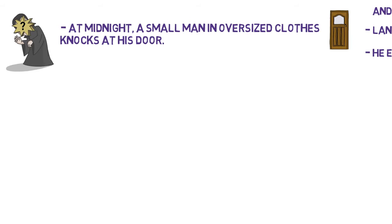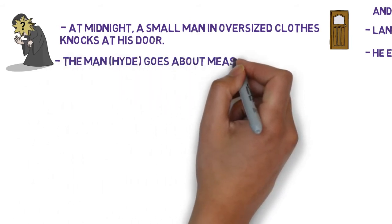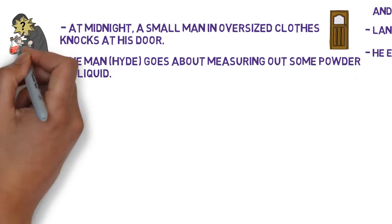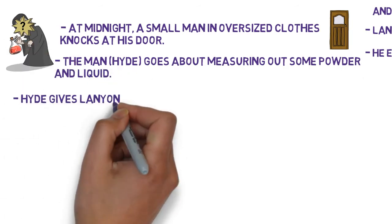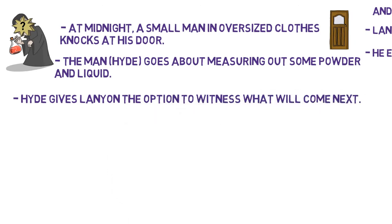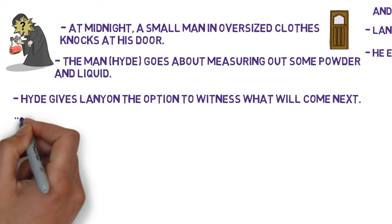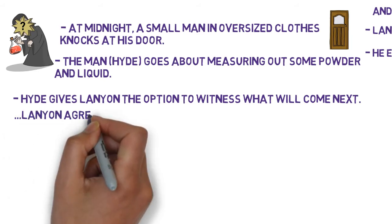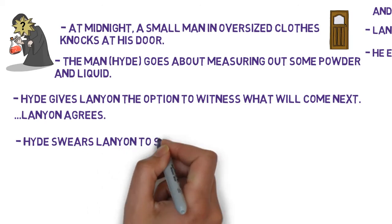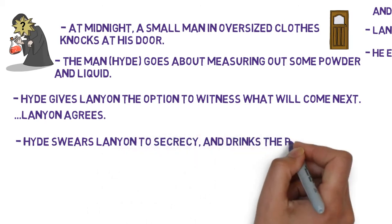The man is impatient, and when Lanyon indicates the drawer, the man — who the reader clearly understands to be Edward Hyde — springs on it and goes about measuring out some powder and liquid. Hyde gives Lanyon the option to witness what will come next, or remain in the dark. Lanyon says that he's come too far with inexplicable services to not see what will happen next, and agrees. Hyde reminds Lanyon of their professional vows — essentially, Hyde swears Lanyon to secrecy — and then he drinks the potion.